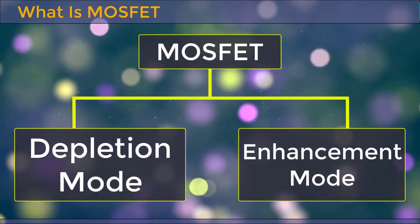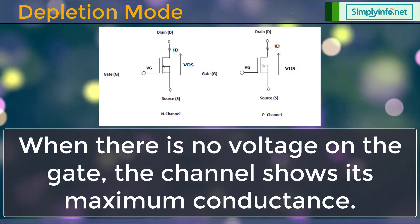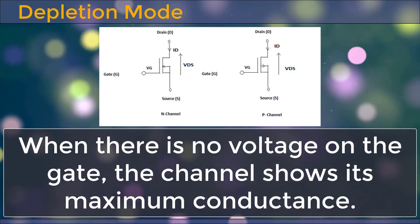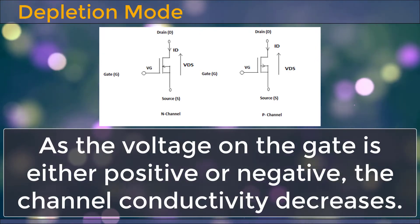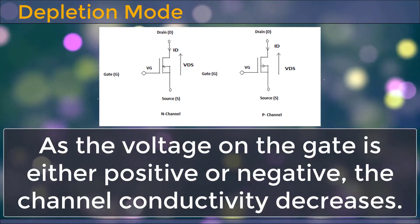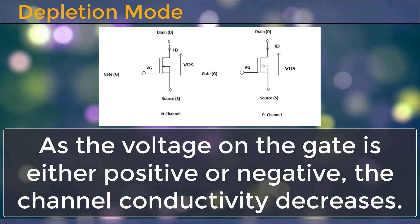Depletion mode: When there is no voltage on the gate, the channel shows its maximum conductance. As the voltage on the gate is either positive or negative, the channel conductivity decreases.